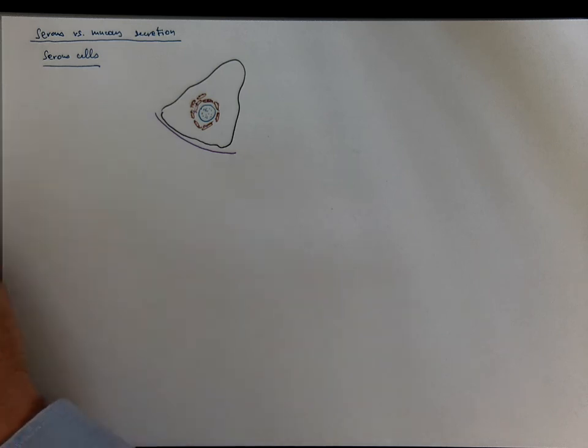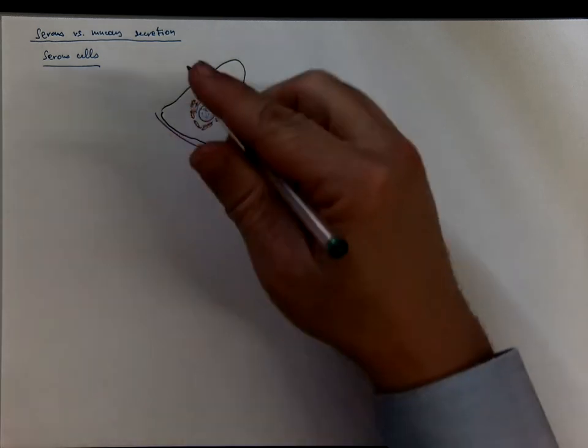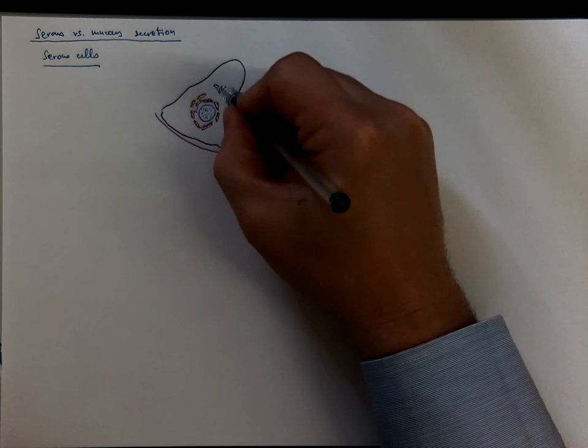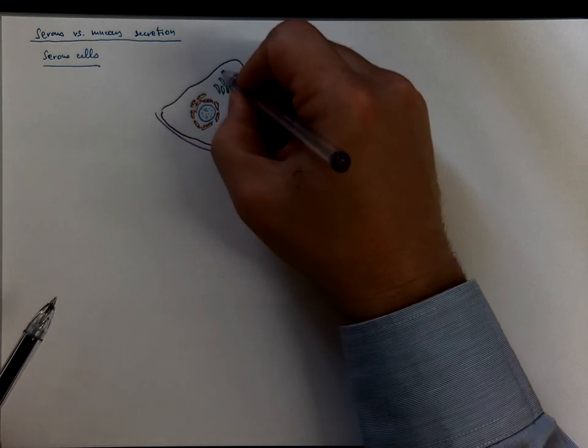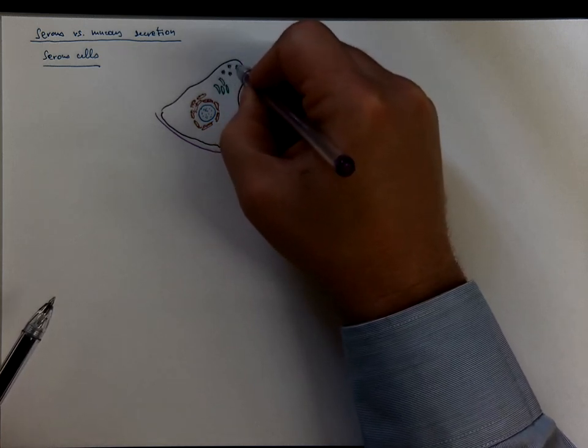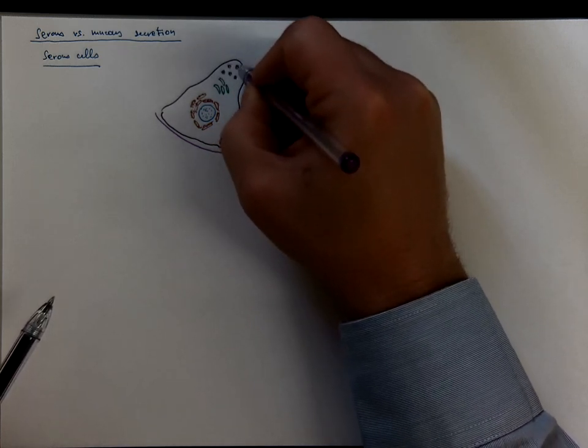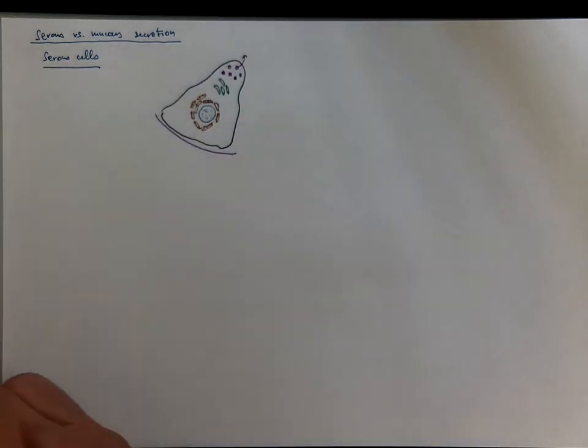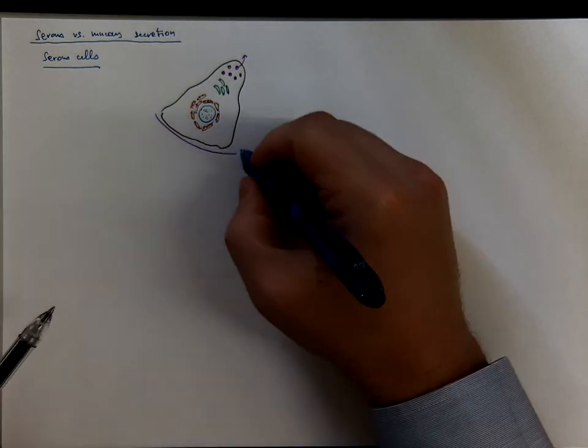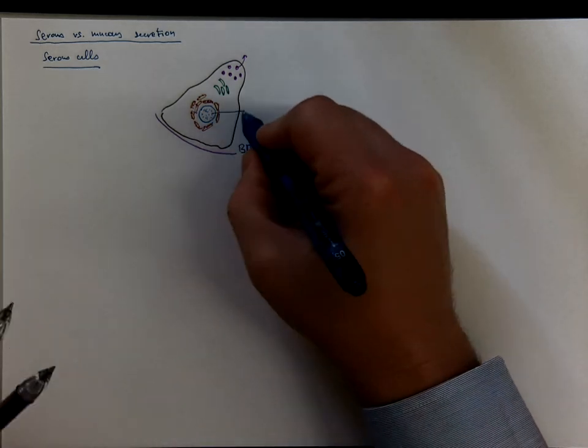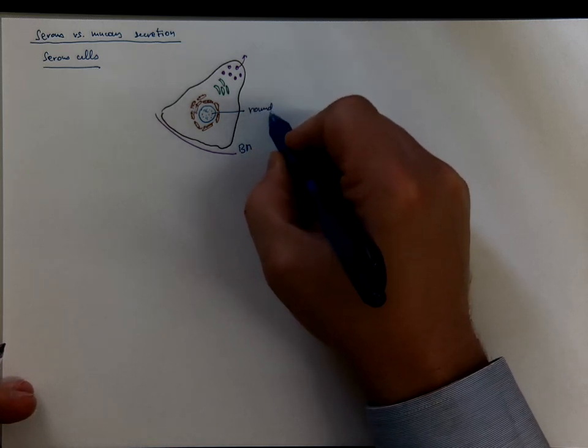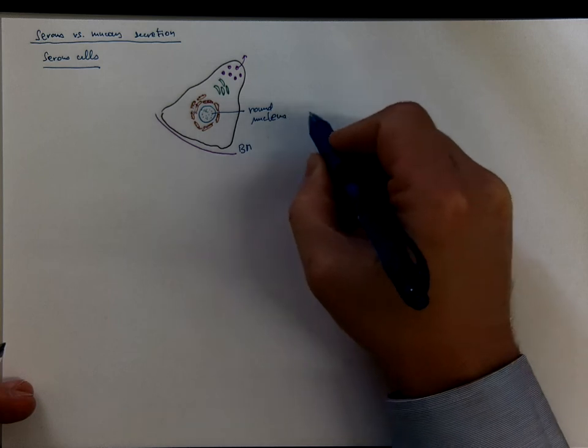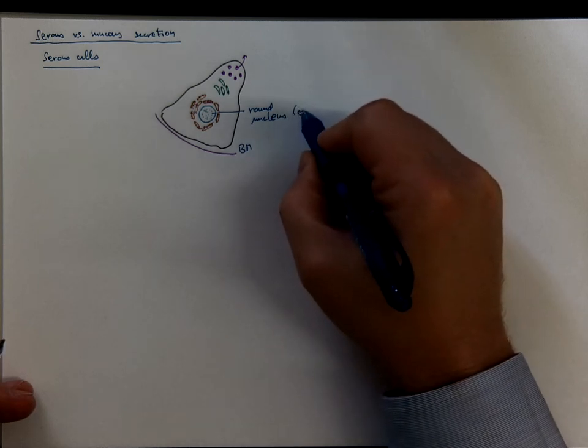So let's add also the ribosomes on the surface of that granular endoplasmic reticulum. Let's add the Golgi complex, responsible for preparing the molecules for exocytosis. And especially in the apical region, you can often find the secretory granules before they are released outside. So if this is the basal membrane, the nucleus is round. It's light because it's made of euchromatin, mainly.